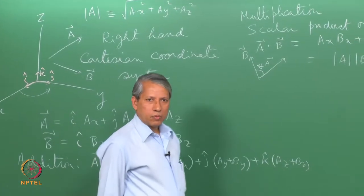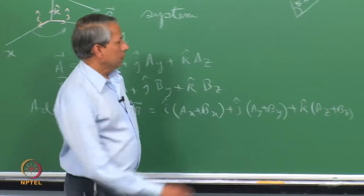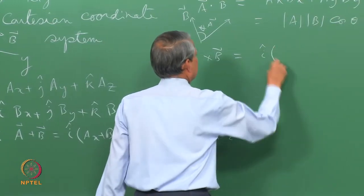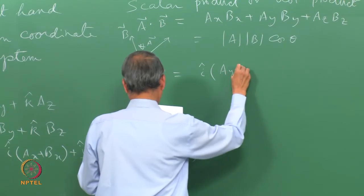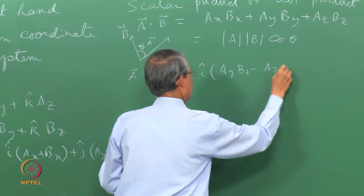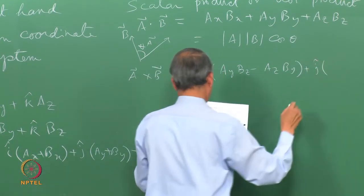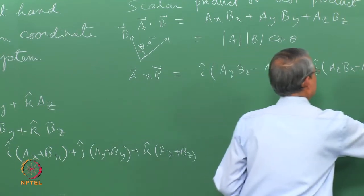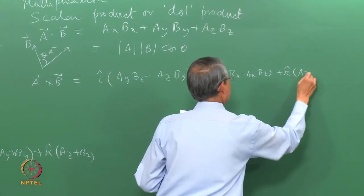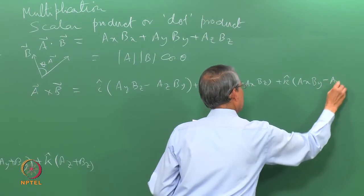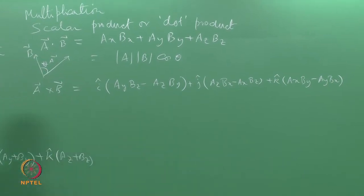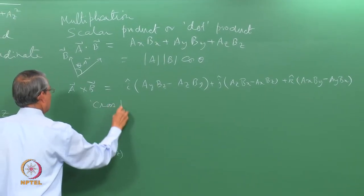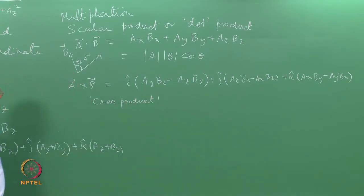Another product is called the vector product, where the resultant is a vector quantity. It is written as A cross B. It is also called the cross product because we use the symbol cross to denote it.